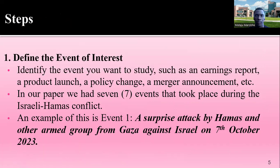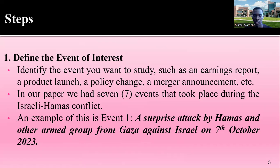Let's go through the steps of estimating an event study. First, you must define a particular event before starting — such as an annual report, a product launch, or a policy change. In our paper, we had a total of seven events that took place during the Israeli-Hamas conflict. For instance, event number one was the surprise attack by Hamas and other armed groups from Gaza against Israel on 7th of October, 2023.